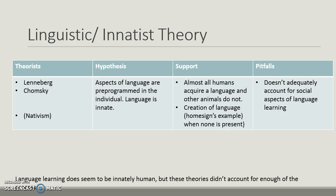The field then moved into linguistic innatist theories with Lenneberg and Chomsky, taking a nativism look at language. Language learning does seem to be innately human, but this theory didn't account for enough of the process. Their hypothesis was that languages are pre-programmed in individuals — innate. This is supported because humans acquire language and other animals don't, and in situations where no language exists, humans will create one. However, it doesn't adequately account for the social aspect of learning a language.